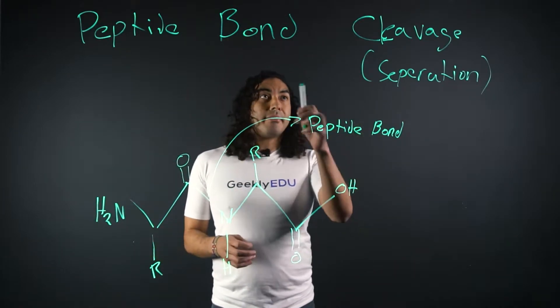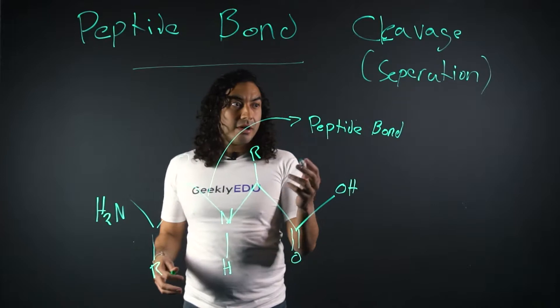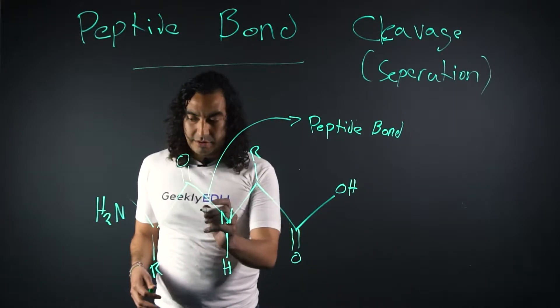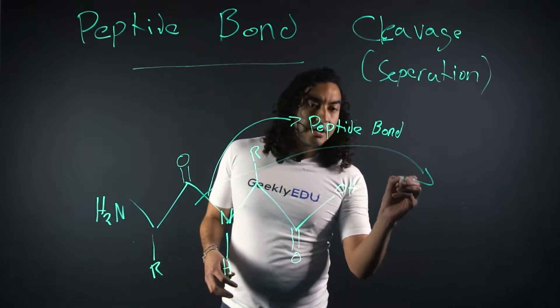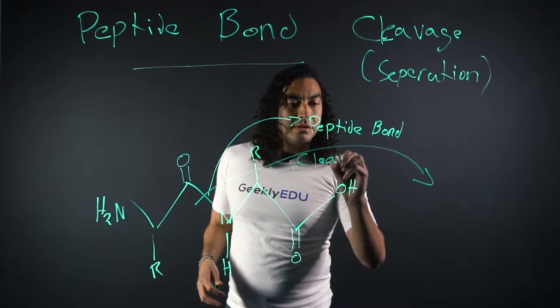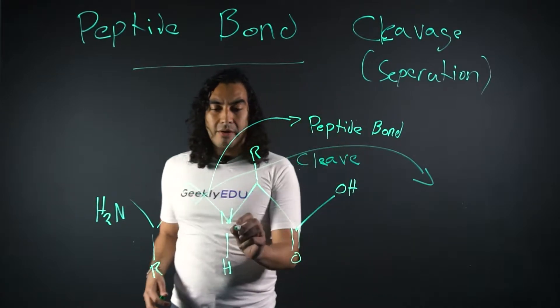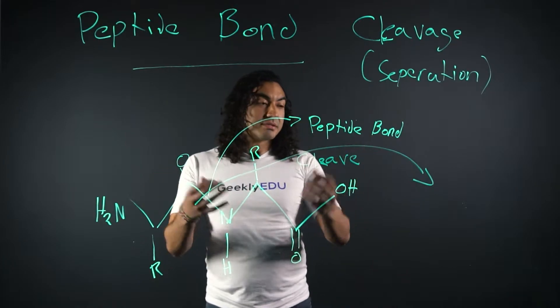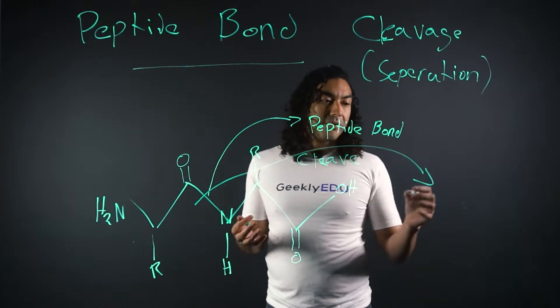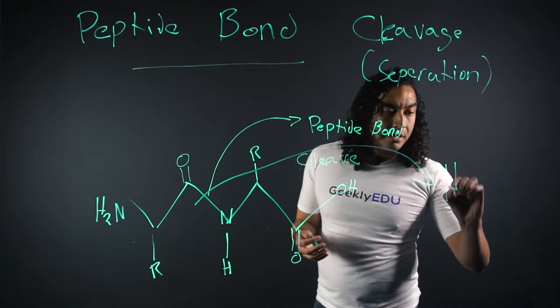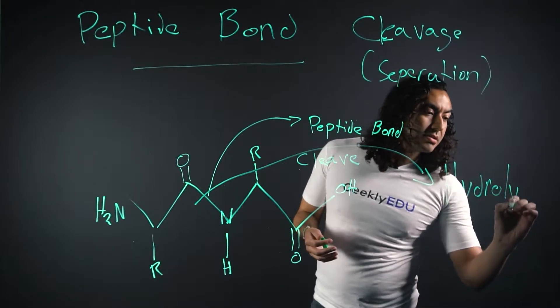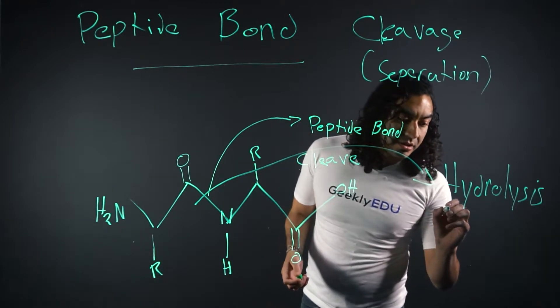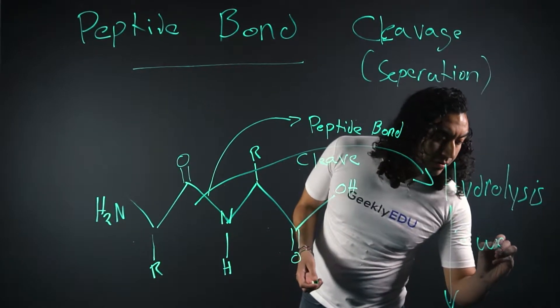So we're talking about peptide bond cleavage or separation. So we know we're going to want to cleave right here. We're going to cleave this section right here, right along here where nitrogen and a double line oxygen is. Because that's where a peptide bond is. And we're going to do that with a process called hydrolysis.